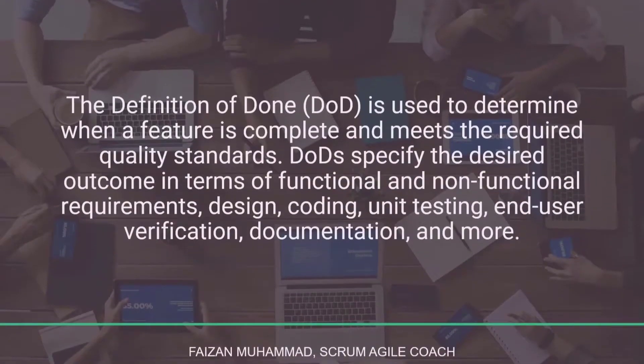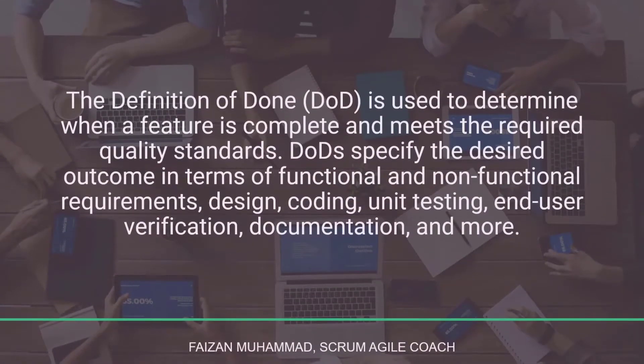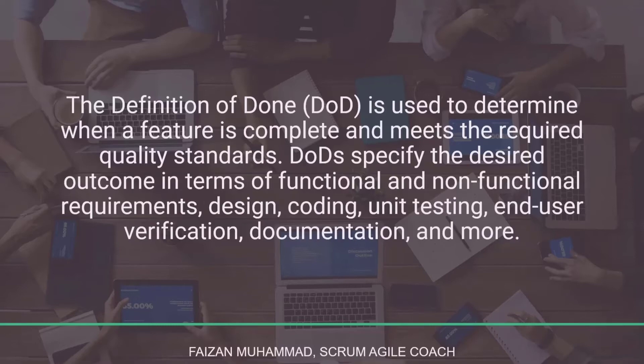The Definition of Done, or DoD, is used to determine when a feature is complete and meets the required quality standards. DoDs specify the desired outcome in terms of functional and non-functional requirements — the designing, coding, unit testing, user verification, documentation, and more. DoDs are defined at both levels of user stories and tasks. User story DoDs focus on functional and non-functional client requirements, while task DoDs focus on the desired working activities of the scrum team members.